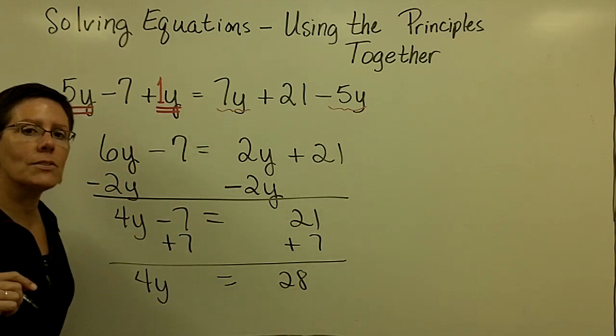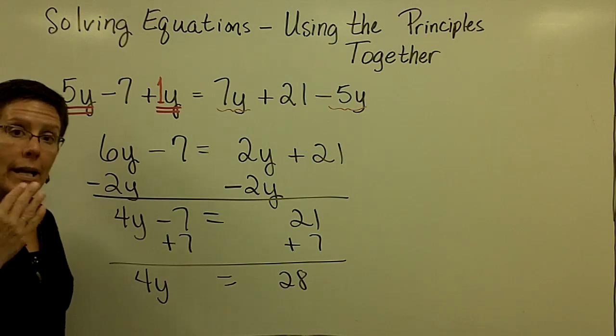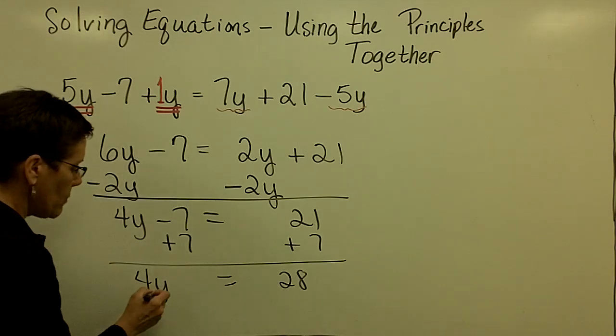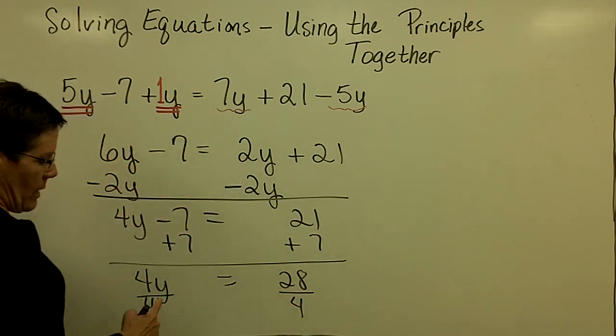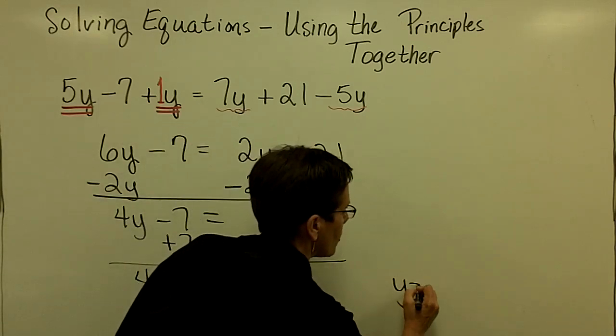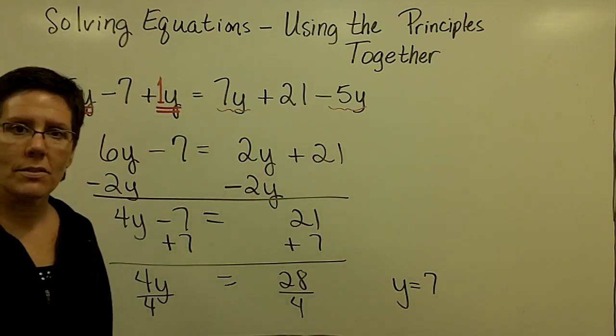So I have 4y equals 28. And not until I'm down to this very last step do I think about dividing both sides by, in this case, 4 because that's the coefficient of the y term, and I find out that y is equal to 7. I'm going to jot that down over here. y is equal to 7.